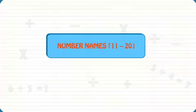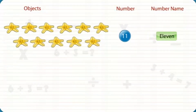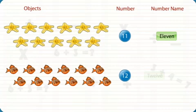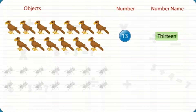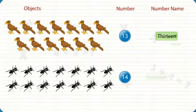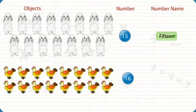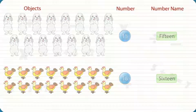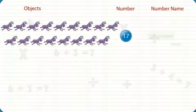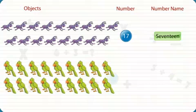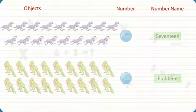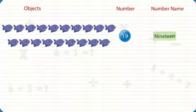Number names 11 to 20: 11, 12, 13, 14, 15, 16, 17, 18, 19, 20.